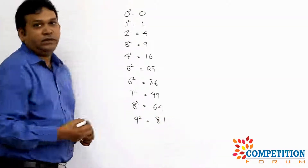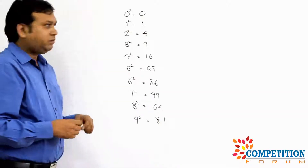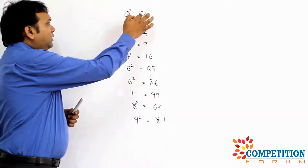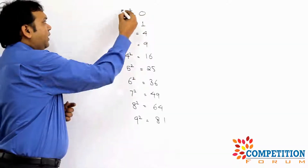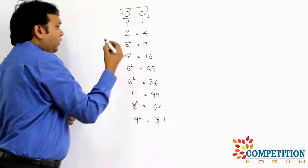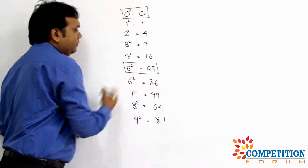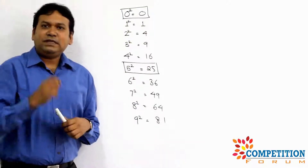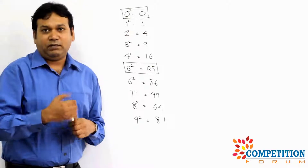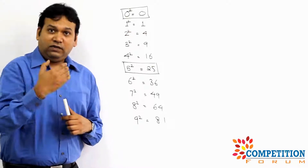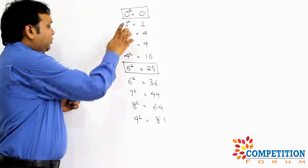When you look at squares from 0 to 9, observe that only 0² ends in 0 — this is an exclusive square pair. And only 5² ends in 5 — another exclusive unique pair. That means if a number ends in 0, only then will its square end in 0. If a number ends in 5, only then will its square end in 5. For other numbers we have two possibilities.